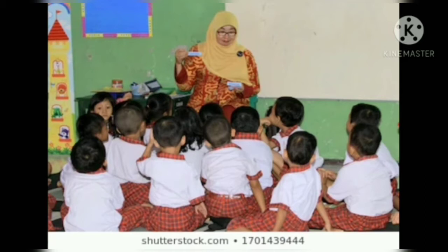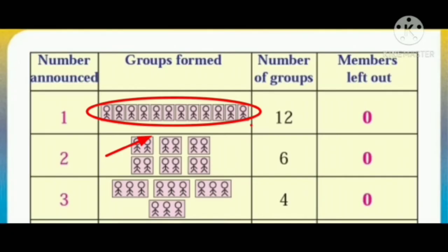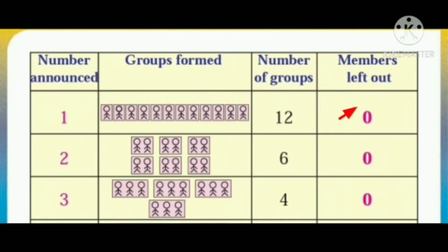Let me start children. I announced the number 1. Now, what you have to do? You are making 12 groups having one student. Now, how many members are left? No one is left because I announced one member. So there is one member in each group.